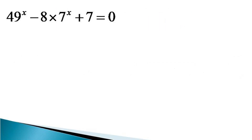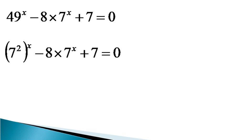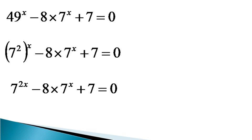To solve this equation, first we express 49 on the left hand side as 7 squared. The equivalent equation becomes 7 squared raised to the power x minus 8 into 7 raised to the power x plus 7 is equal to 0. The indices on the left hand side first term get multiplied, and the equation becomes 7 raised to the power 2x minus 8 into 7 raised to the power x plus 7 is equal to 0.